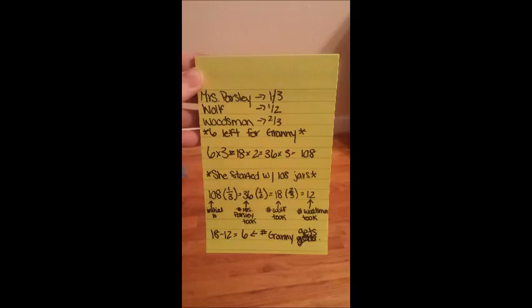Times one half, which equals eighteen, which is the number the Wolf took, times two thirds, which equals twelve, the number the Woodsman took.